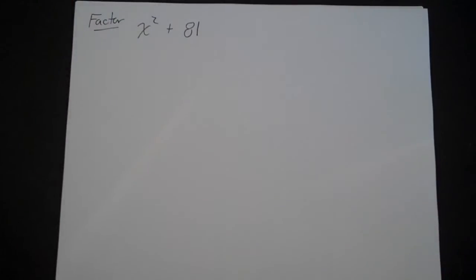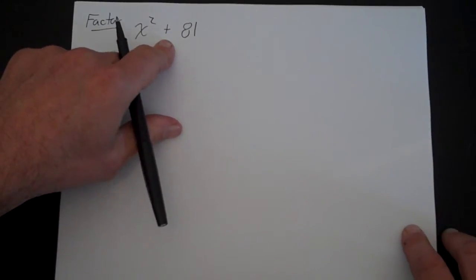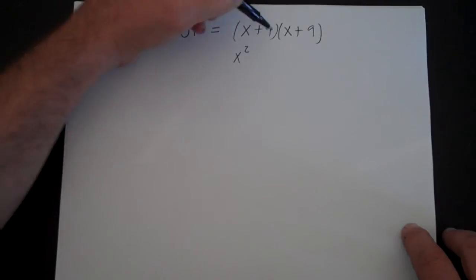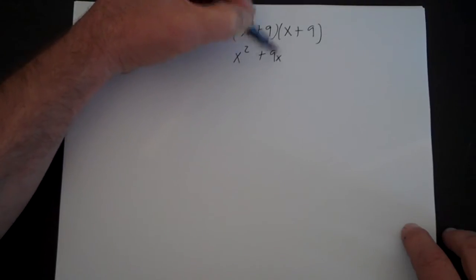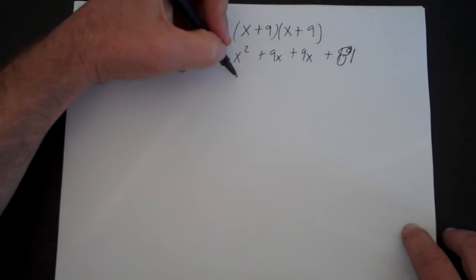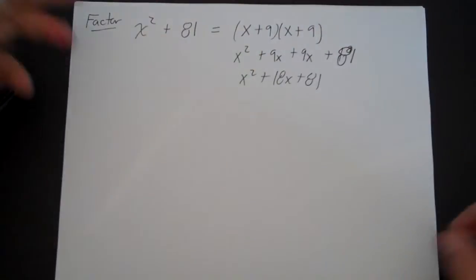We can get even more complicated when you have a problem like factoring x squared plus 81. Now we have two perfect squares, but they are added together. A lot of people will think this factors as x plus 9 times x plus 9, but we can see that's not true by FOILing it out. That gives x squared plus 9x plus 9x plus 81, which equals x squared plus 18x plus 81 — that is very definitely not x squared plus 81. So that does not work.